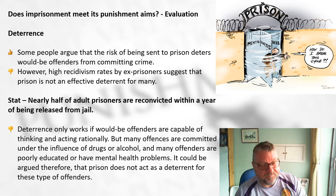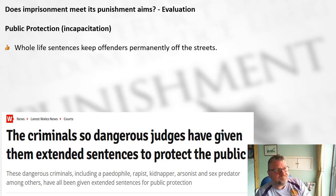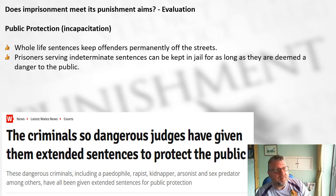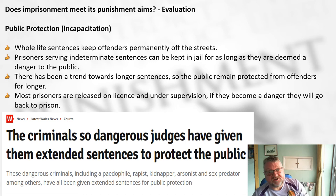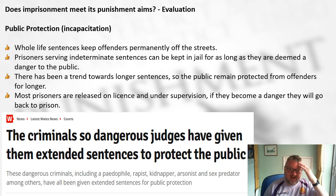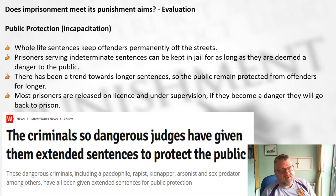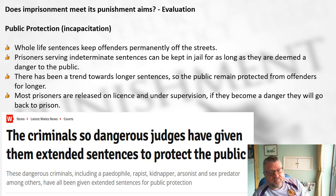On protection: whole life sentences permanently keep offenders off the street, and indeterminate sentences keep prisoners in jail as long as they're deemed a danger to the public. There's been a trend towards longer sentences to protect the public for longer, and most prisoners are released on licence under supervision with recall to prison if they become a danger. However, prisons have been criticised as 'schools for crime' where prisoners acquire new skills and contacts that lead to more serious future crimes.